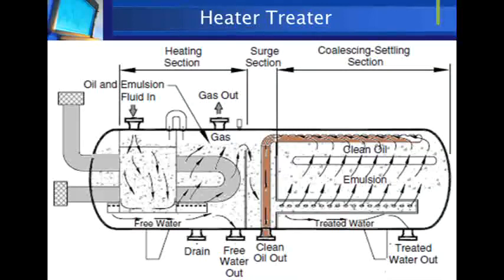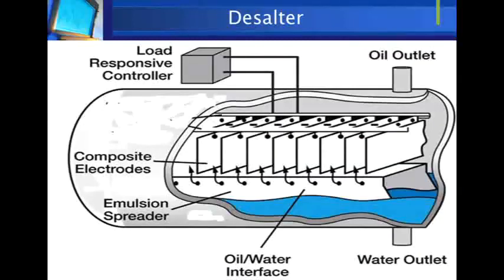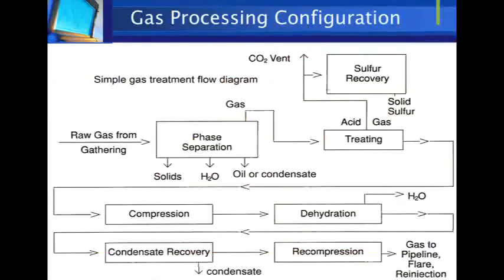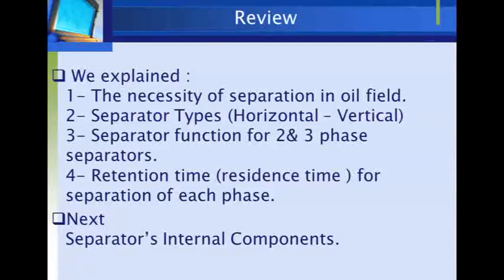Further processing is required to achieve the required crude oil specifications. A heater-treater typically exists downstream of the separator to heat the emulsion, reducing crude oil viscosity and allowing more water separation. Fresh or low-salinity wash water is then added to the crude oil, and the crude is pumped into a desalting vessel, which separates small water droplets by applying an electrical field to coalesce droplets and enhance separation. Further gas treatment may also be required, including acid gas treatment (gas sweetening), dehydration, and natural gas condensate recovery.